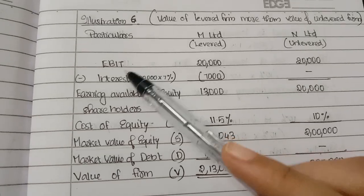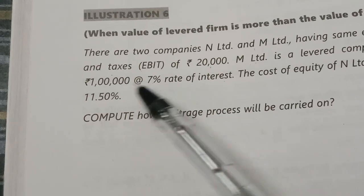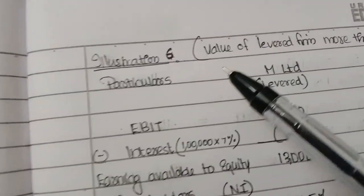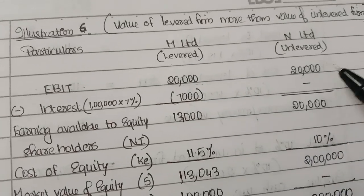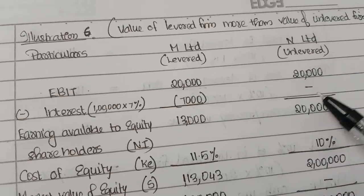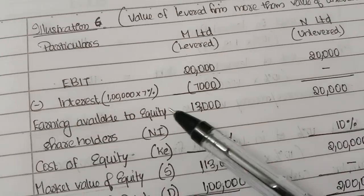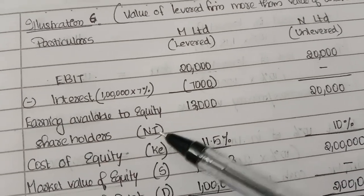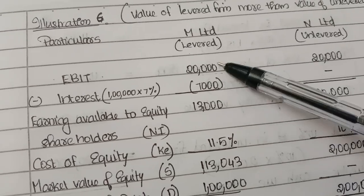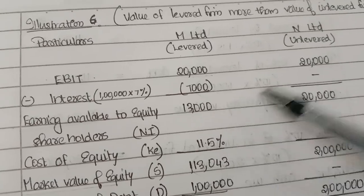Now we need to subtract the interest. The interest given in the question is 7% of 1 lakh, which is 7,000 rupees in the case of the levered firm. In the case of the unlevered firm, it is nil. Then we find the earnings available to equity shareholders, i.e., net income, by subtracting interest from EBIT. We get 13,000 for M Limited and 20,000 for N Limited.